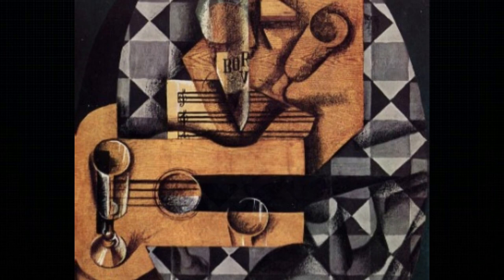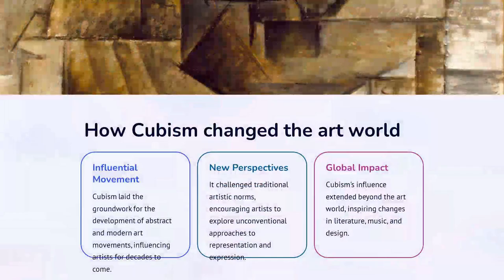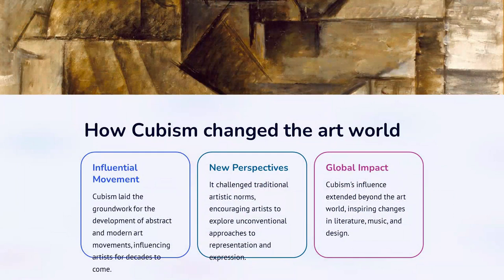Juan Gris, Guitar, Bottle, and Glass, 1914 — a magnificent example of Cubist still-life, highlighting the use of geometric forms and intricate details.